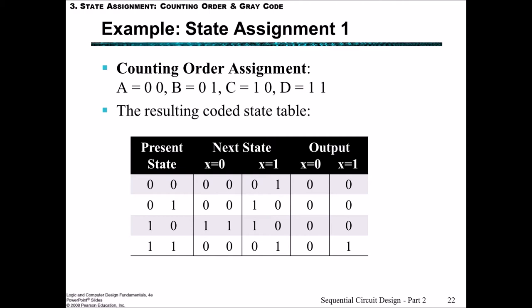Let's think about first of all the counting order. That would be where A, B, C, D matches with 0, 0, 0, 1, 1, 0 and 1, 1. That is 0, 1, 2, 3. That's intuitively the way you think you should do it. However, depending upon what the state table and state diagram or what the sequence we're looking for is, it can actually change. So let's first of all write out this state table.